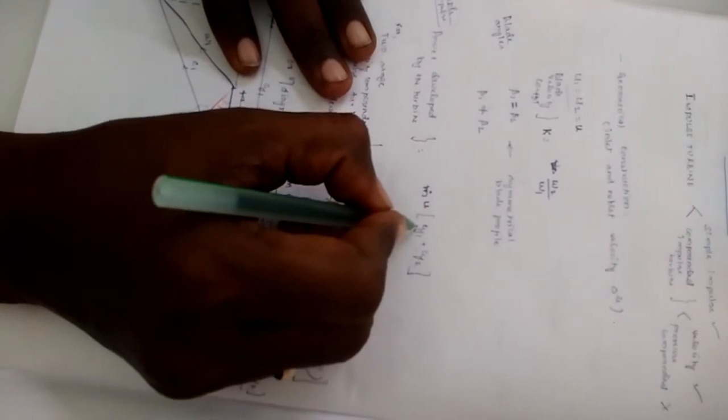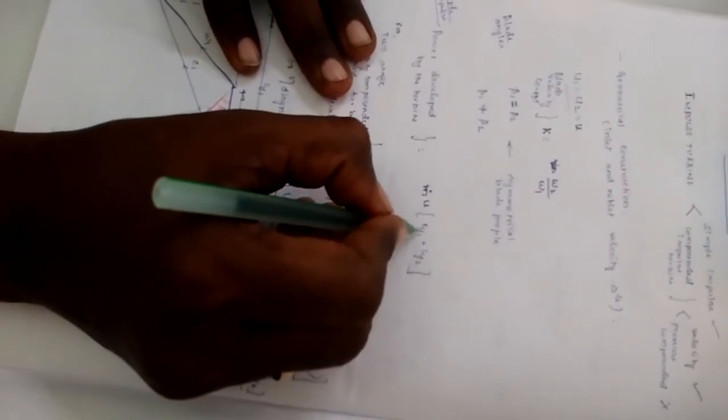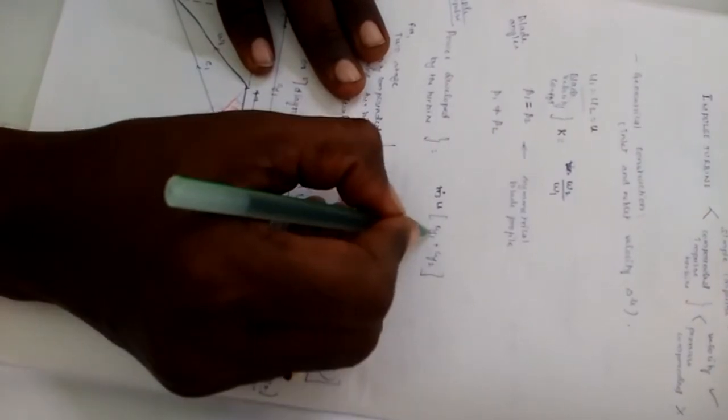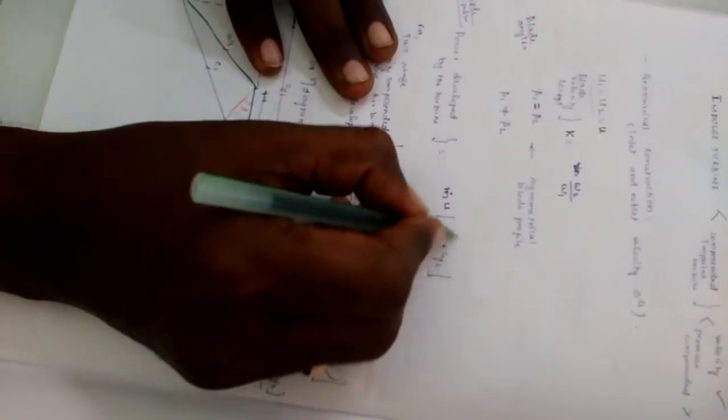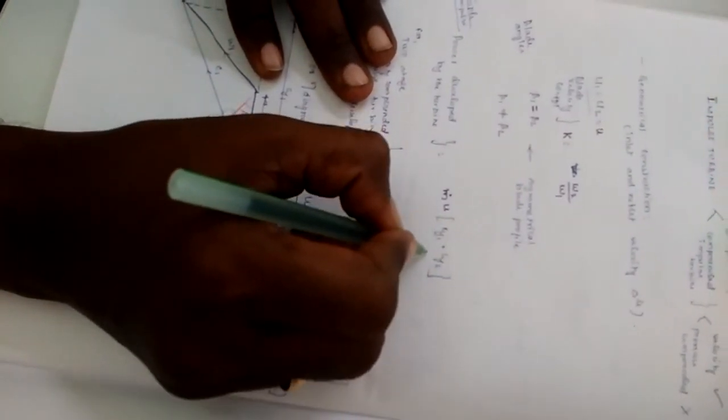And if it is a multi-stage turbine, for velocity compounded turbine, then we will be having—let us say if you are going to have a simple case of two stages—then we have to draw it for first stage of the blade row and second stage of the blade row.